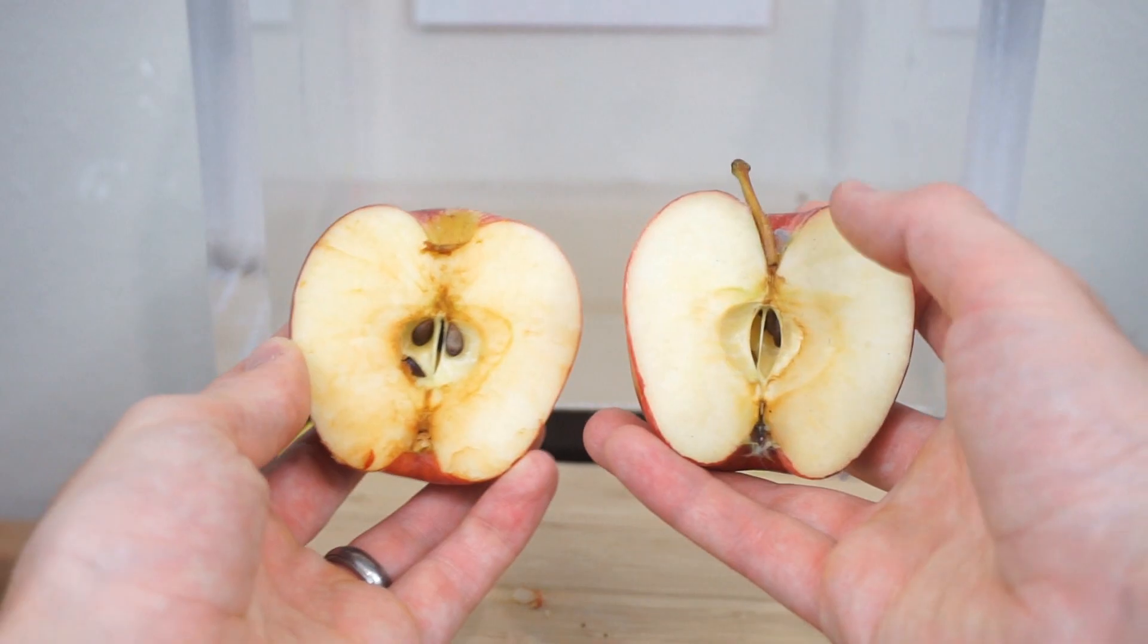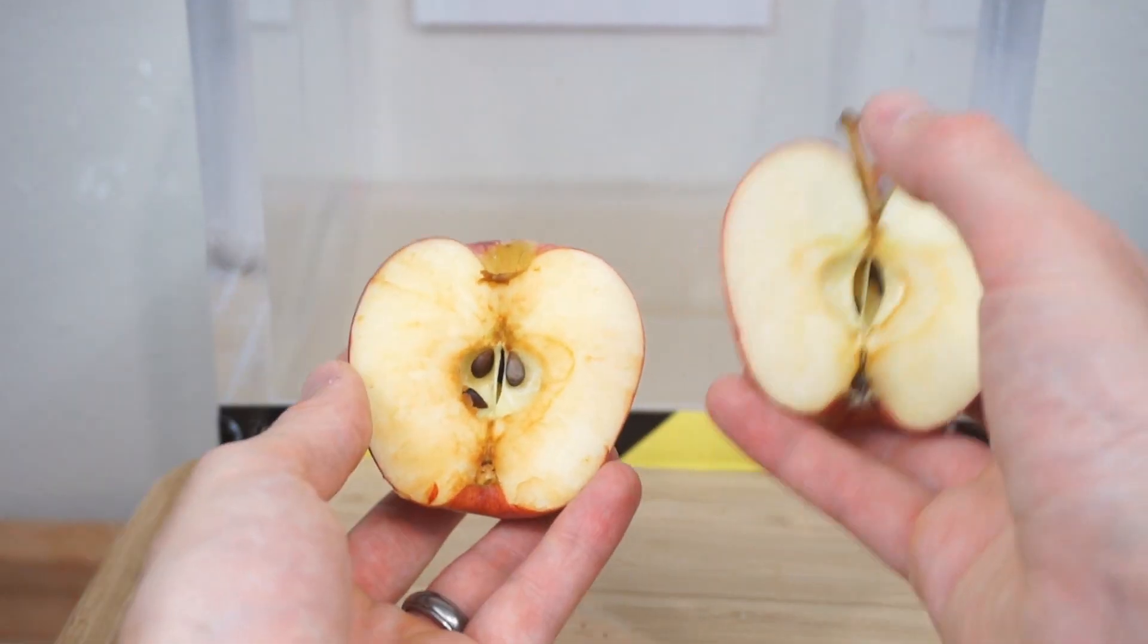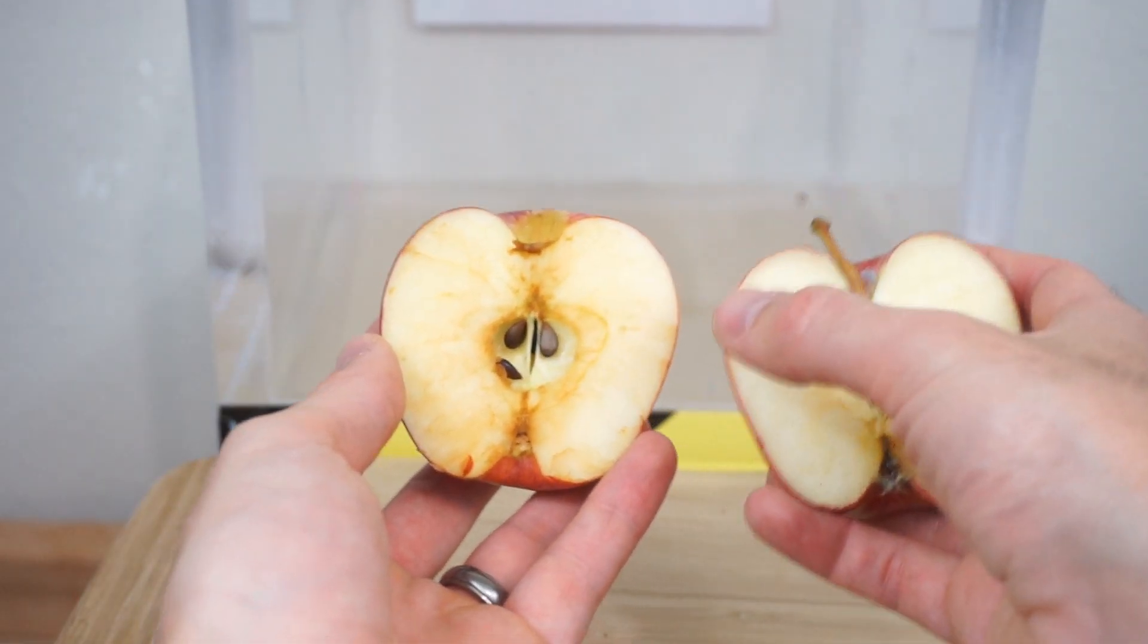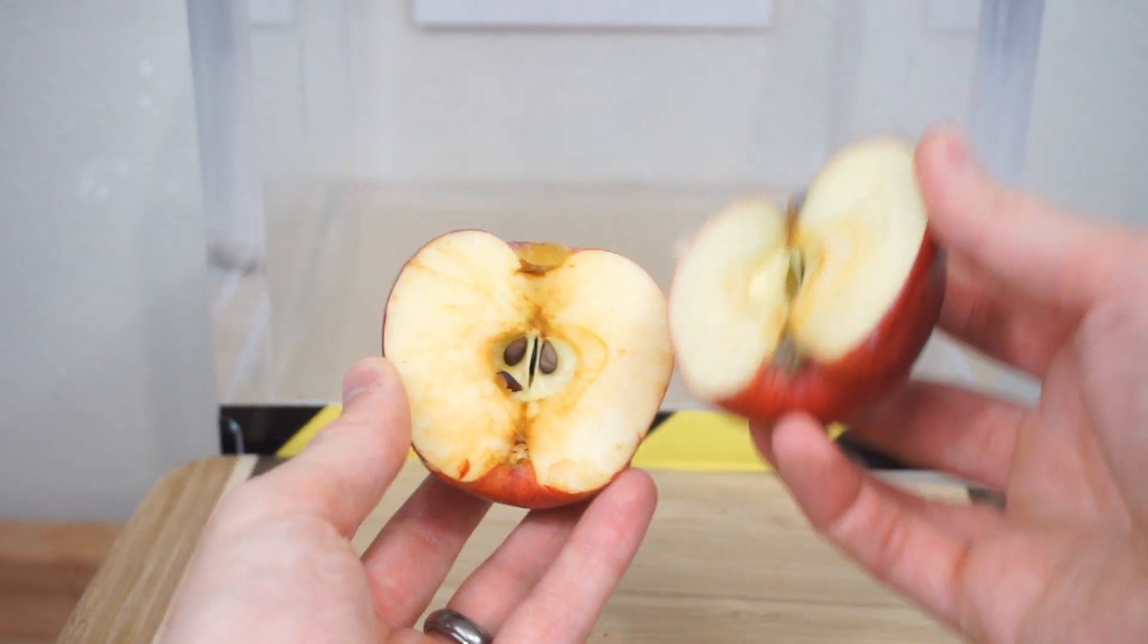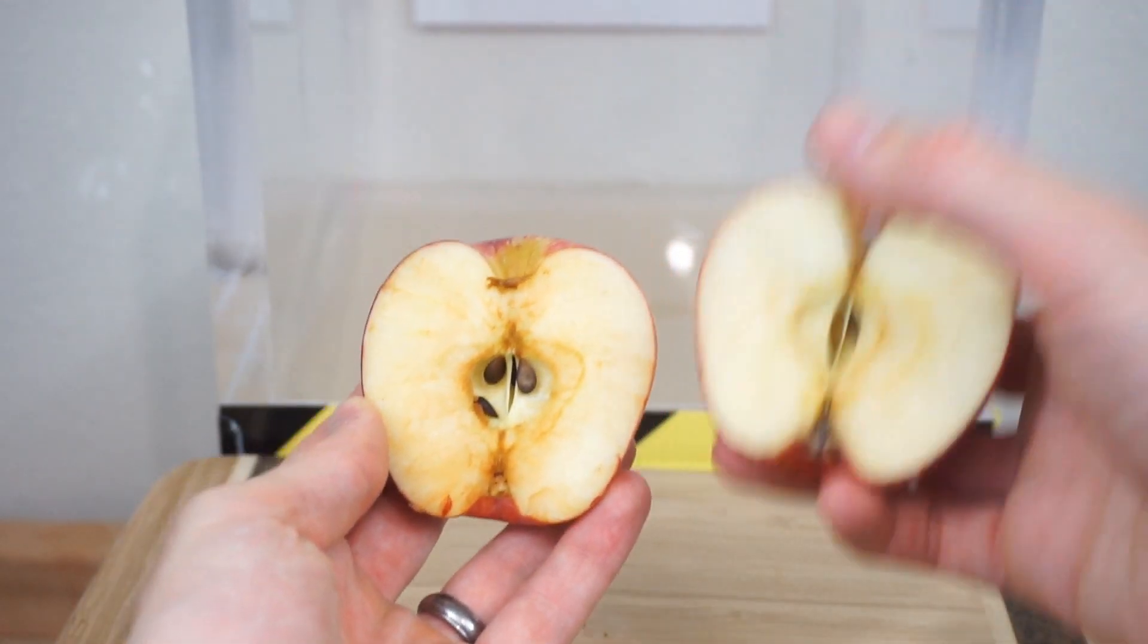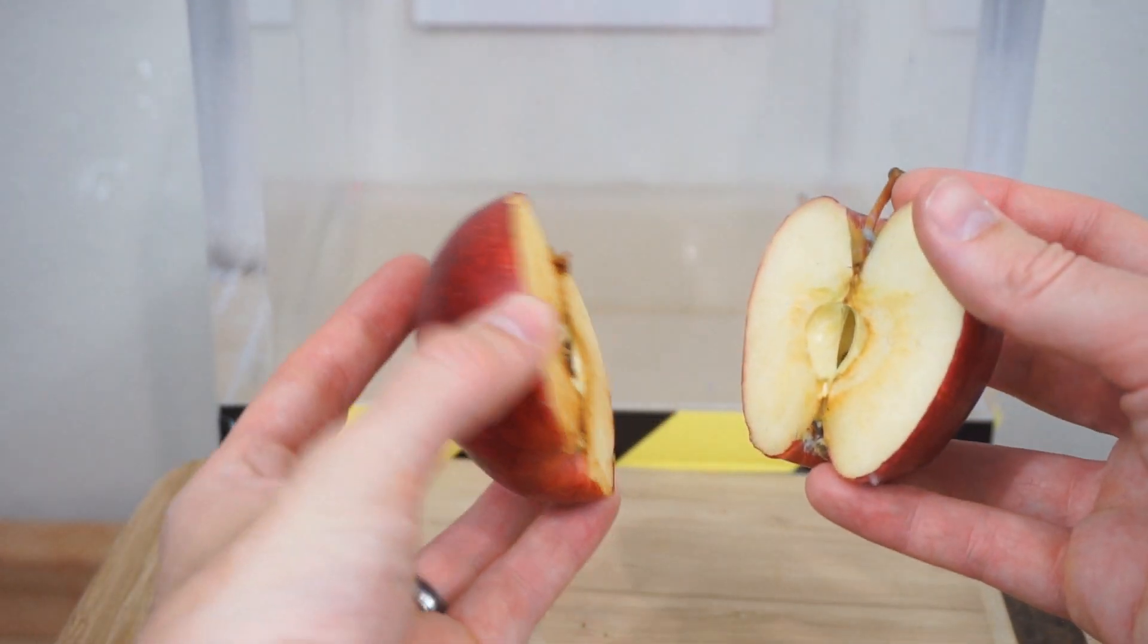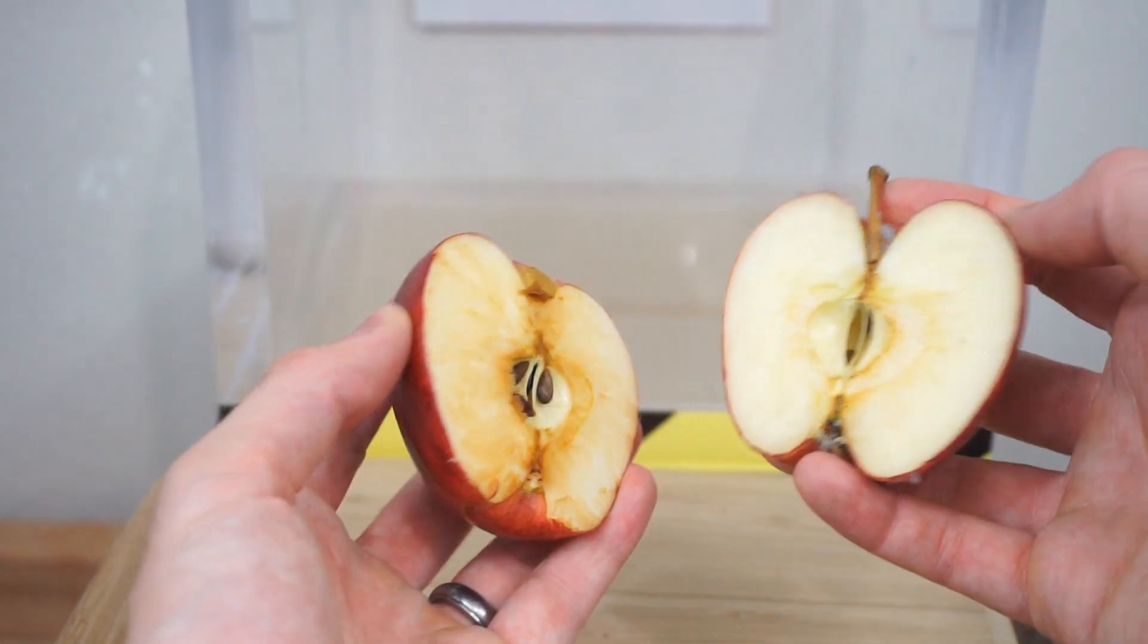So there's an enzyme called polyphenol oxidase. The oxygen oxidizes quinones or just certain molecules in the apple and it makes the color brown. And so if you don't let the oxygen into the apple then that won't happen, even though the enzymes are still present.